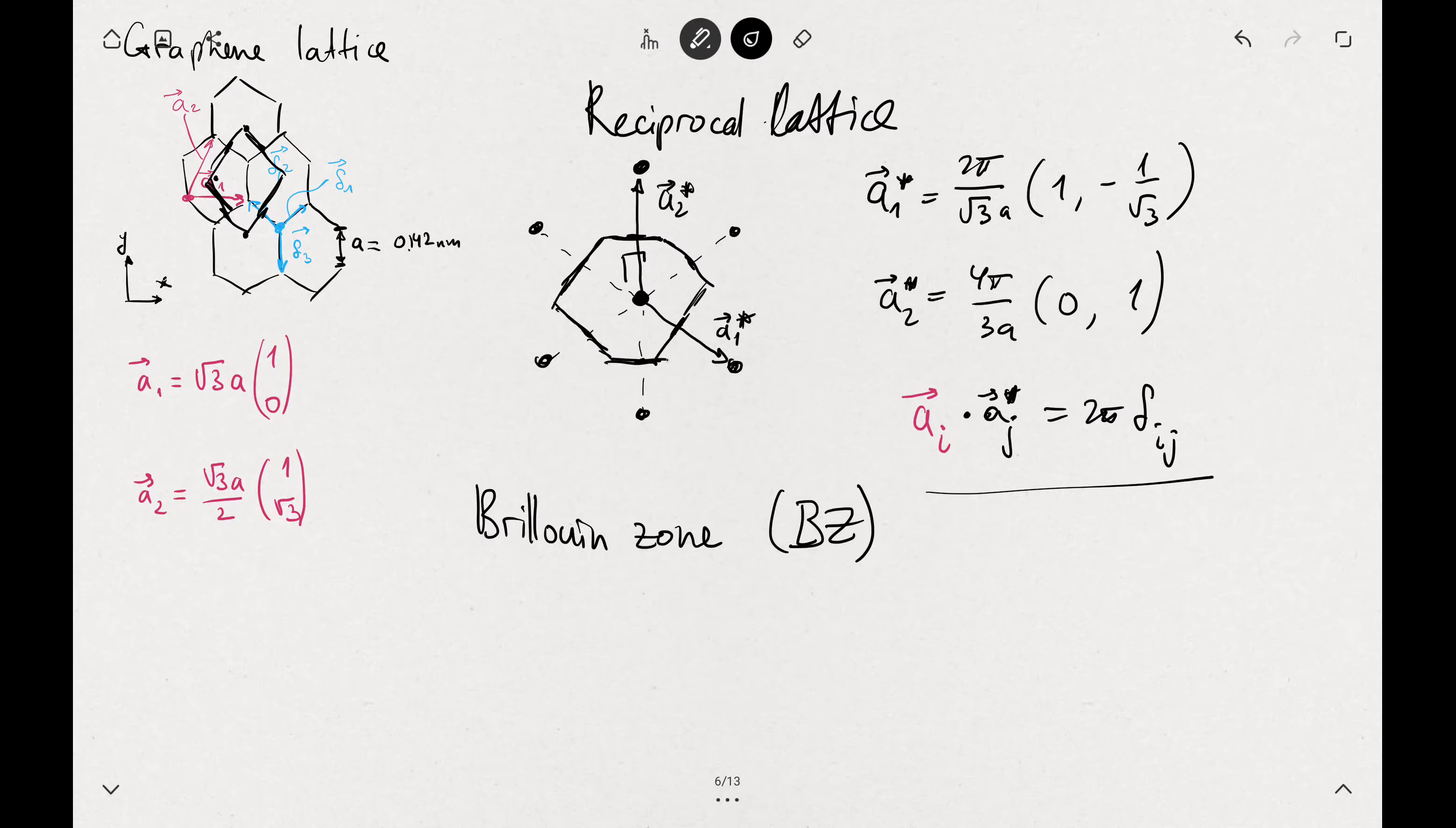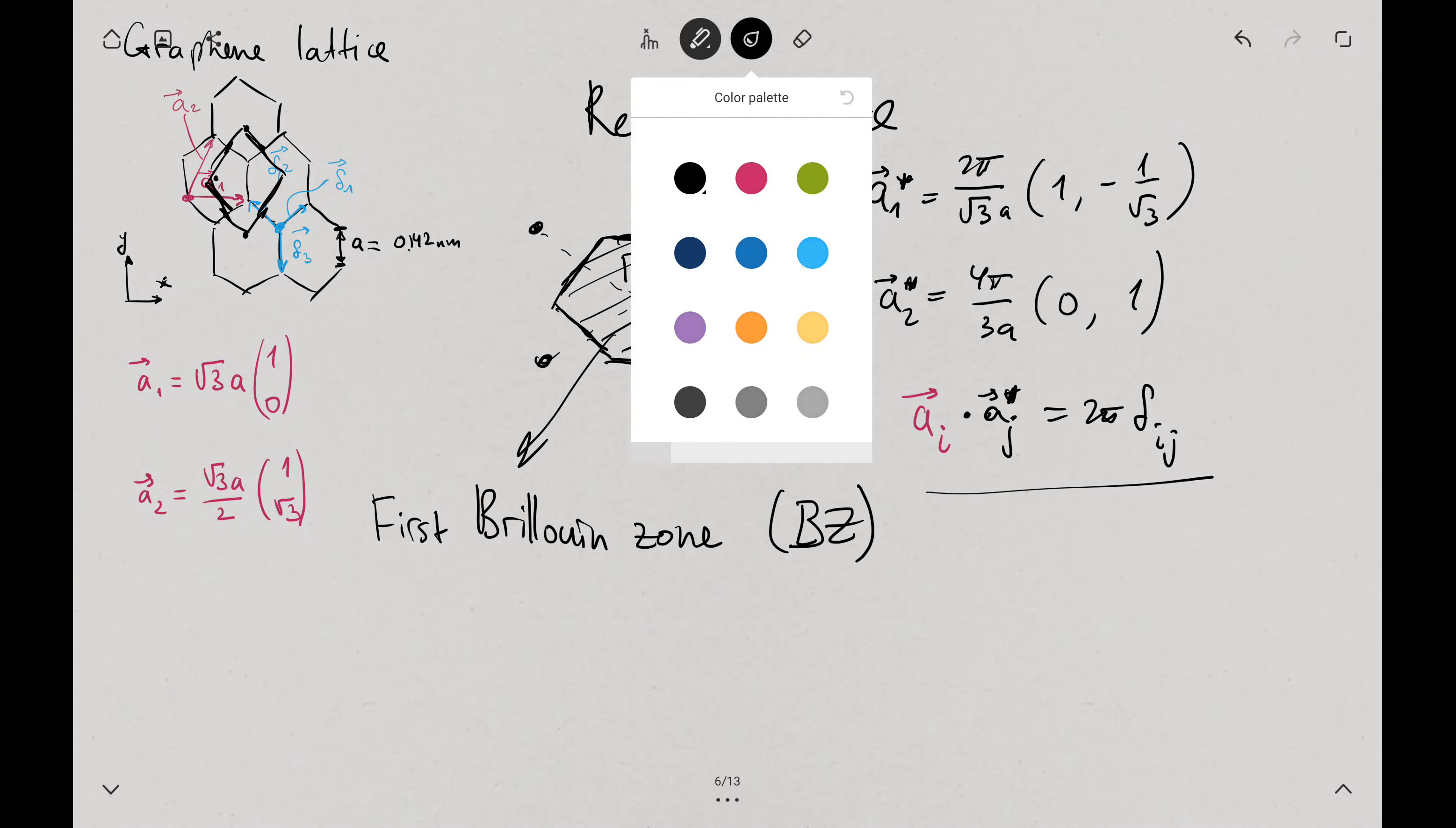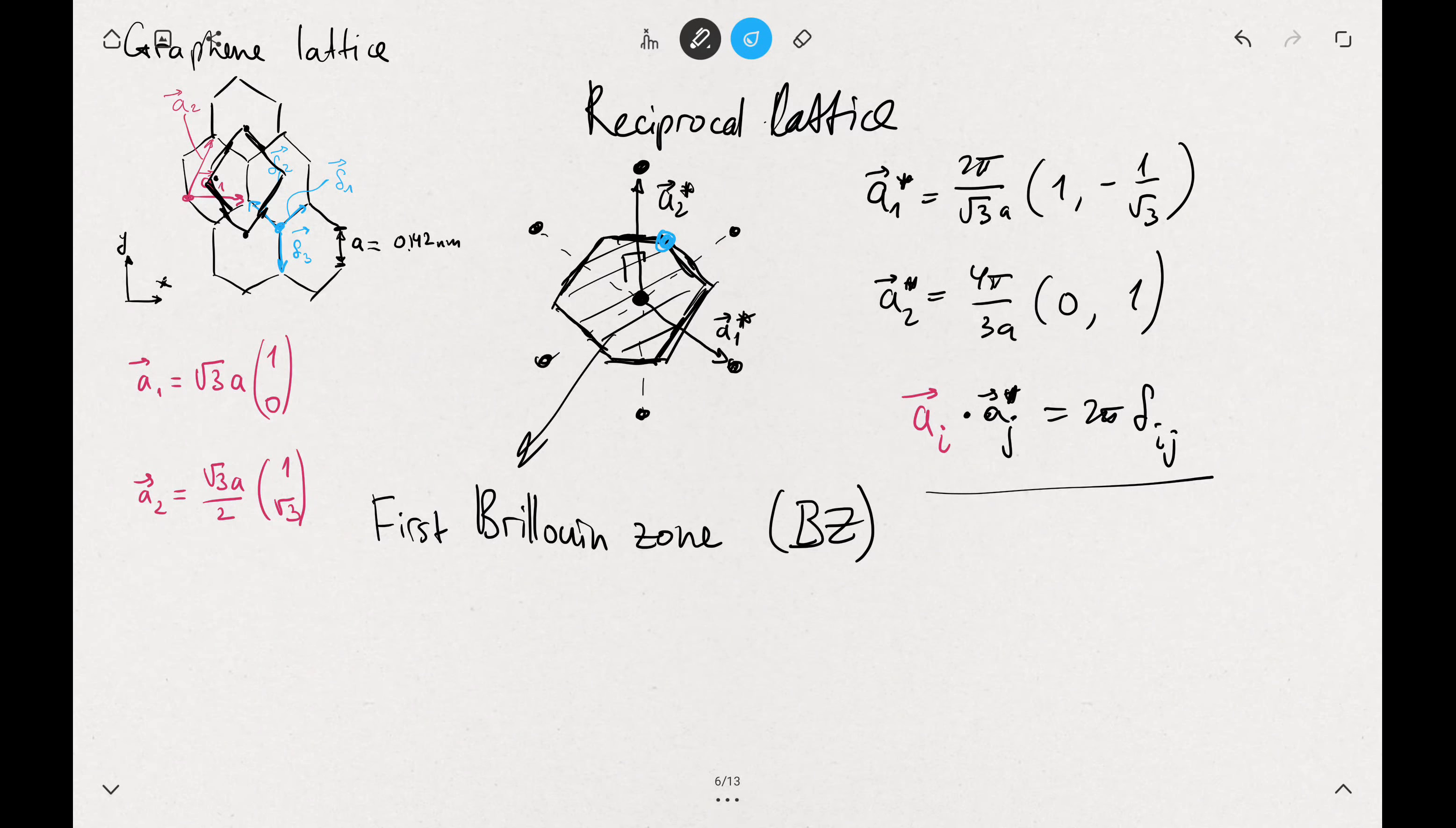This hexagonal shape structure will be your first Brillouin zone. And the corners here, those are called K points.